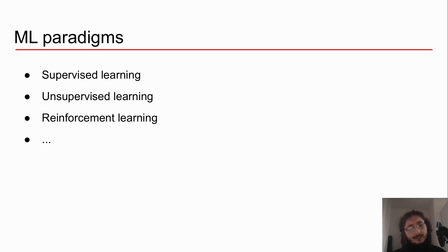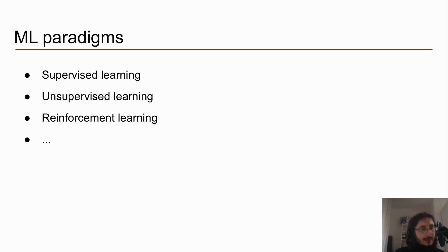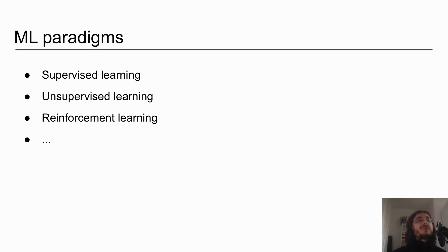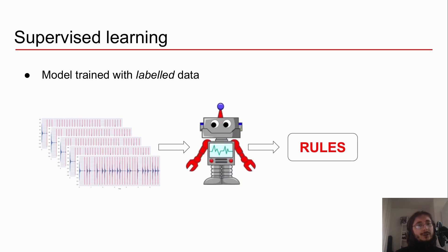In machine learning, we have a bunch of different paradigms or flavors. I'm going to refer to three here, though there are a few more. The first is supervised learning, which we'll be mainly focusing on throughout this whole series. Then we have unsupervised learning, and then reinforcement learning.